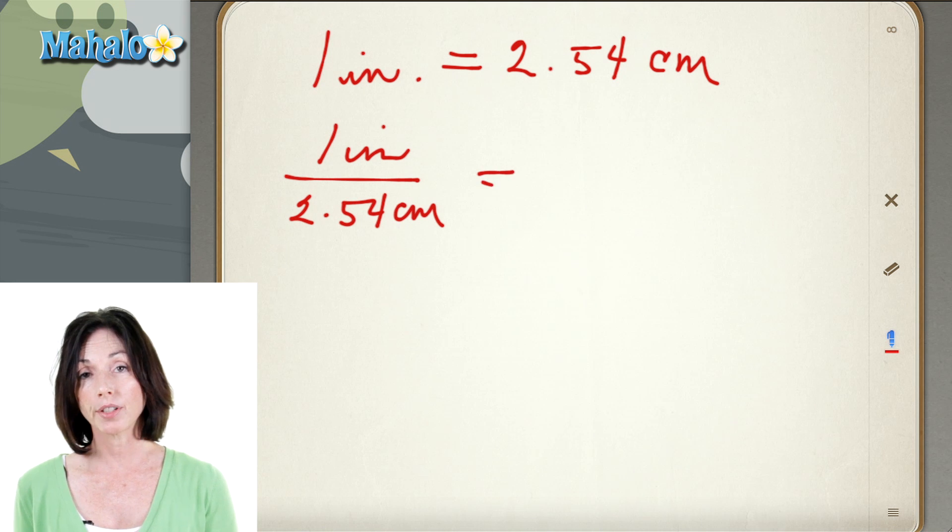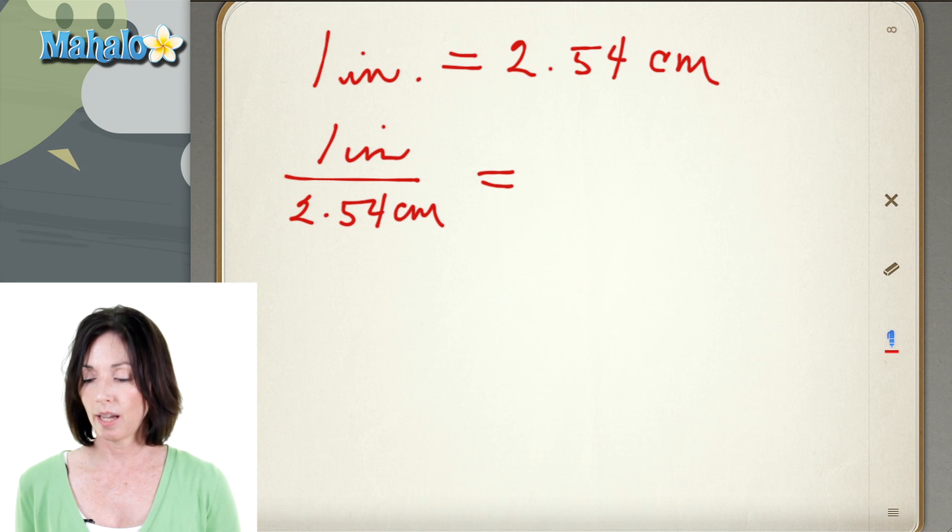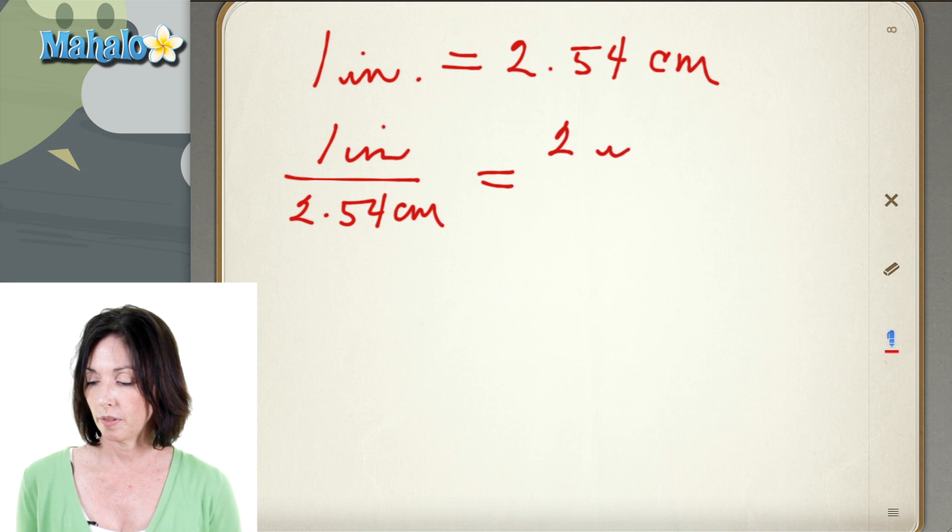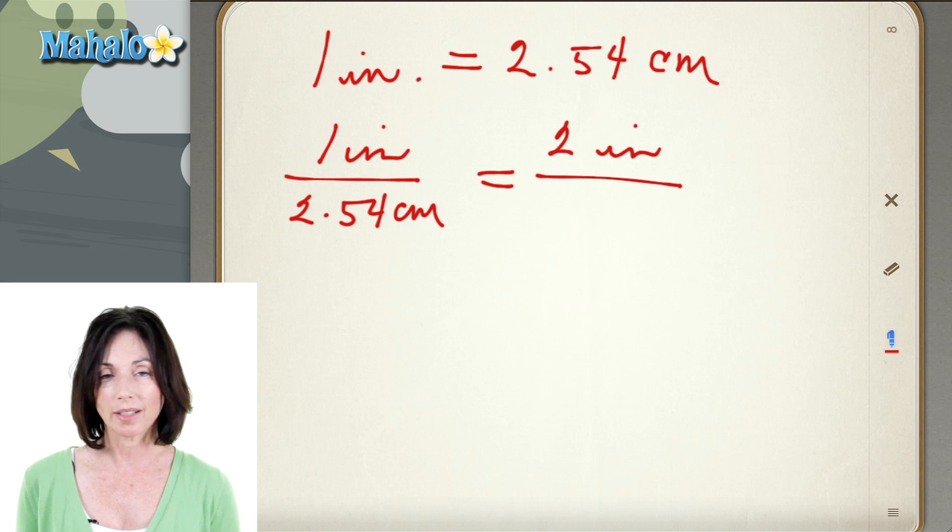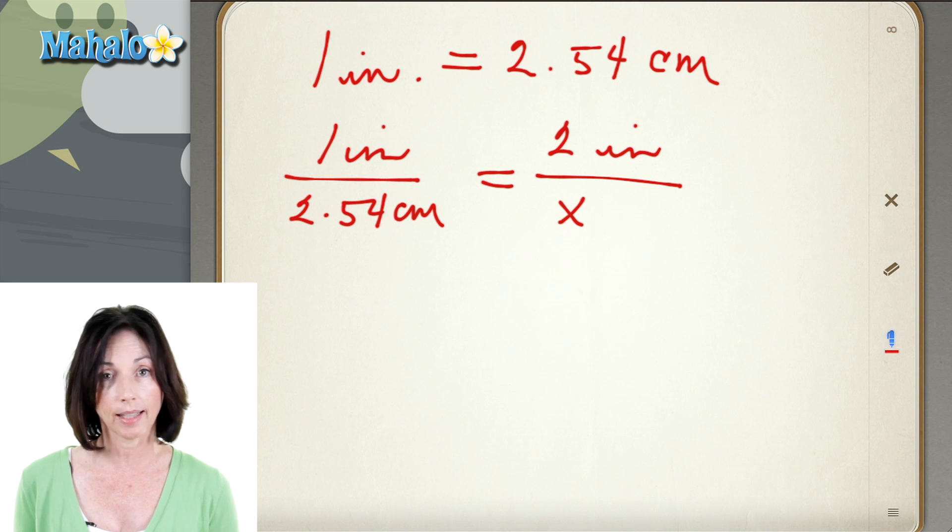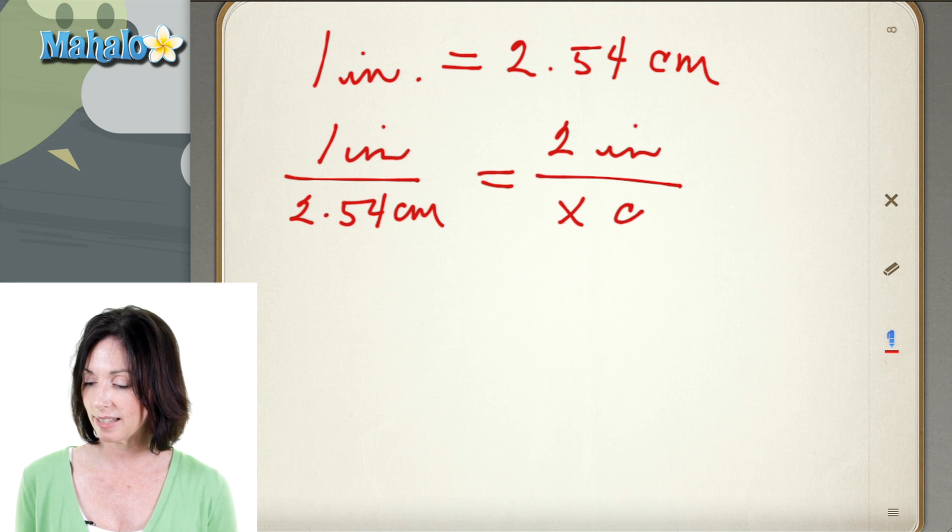And then on the other side I'm going to have the thing I want to convert which is my 2 inches. And I want to convert it into centimeters. I don't know how many centimeters that is yet. That's what I'm going to figure out. So we have x centimeters on the bottom.